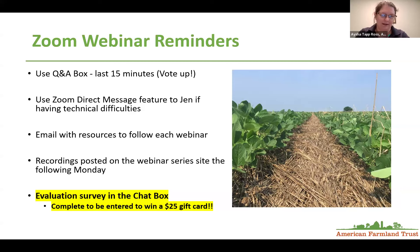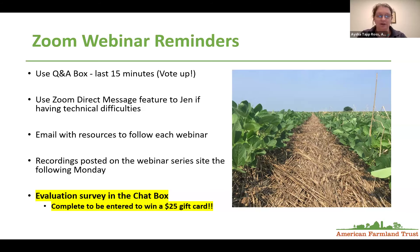Jen will be sharing a link to a nine-question evaluation survey, which you can choose to answer anonymously and should take about two minutes to complete. The survey will pop up when you leave, but you can also click it now so it opens in a new tab. Please complete the survey right after the event ends. Our presenters and the AFT team rely on these surveys to help inform next month's speaker and any changes to the webinar series. We're also offering an incentive — everyone who fills out the survey today before 6 p.m. Eastern will be entered to win a $25 Visa gift card. The winner will be notified by email tomorrow morning.